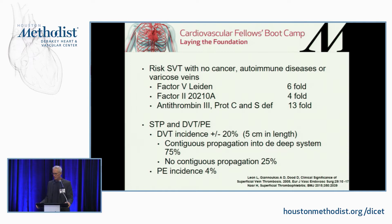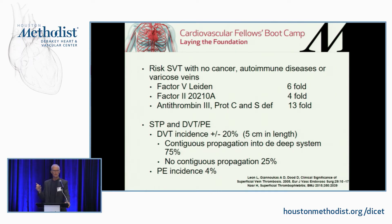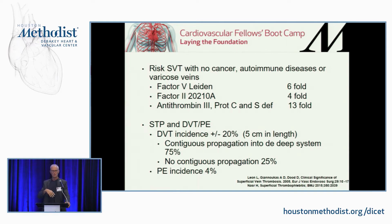The real question you have to face is: what's the chance that if somebody has a red-hot tender streak on their calf — anybody could figure out that's a clot in a superficial vein — what's the chance they've also got DVT? We used to just routinely put these people on ibuprofen and forget about them. It turns out there's a 20-25% chance that they will have contiguous deep vein thrombosis.